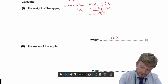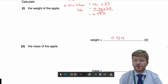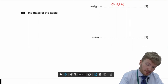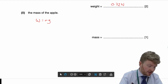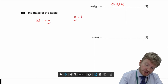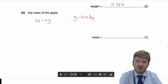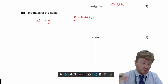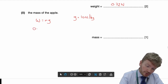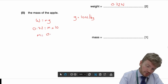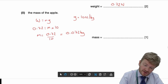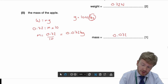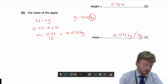Don't forget this is a force, so we need the unit newtons. For the mass of the apple, weight equals mass times gravity. For CIE, g equals 10 N/kg. So 0.72 equals mass times 10, meaning mass equals 0.72 divided by 10 = 0.072 kilograms. You could change that to 72 grams, but there's no real reason to do so.